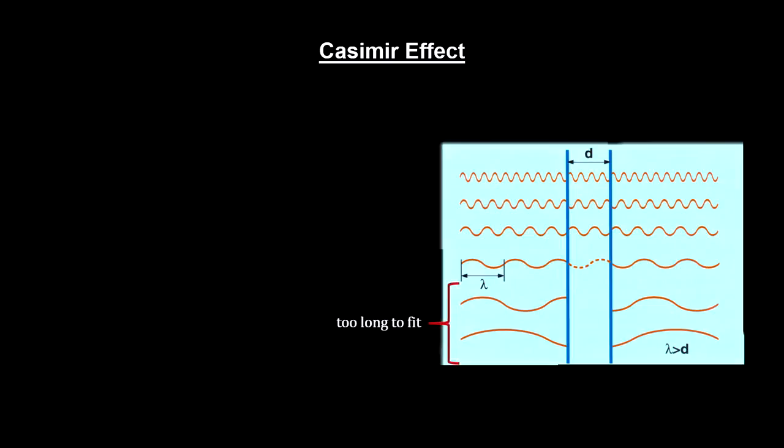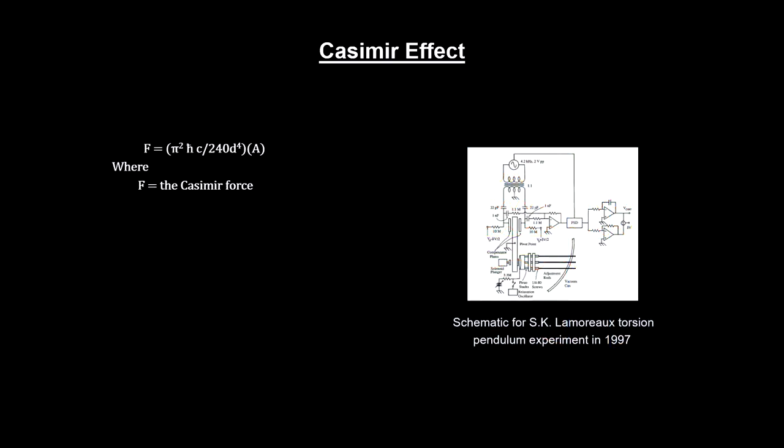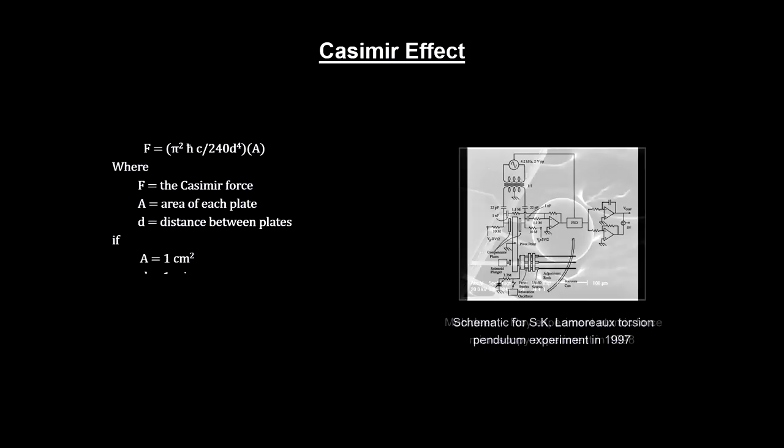If you place two parallel low mass conducting surfaces close to each other, the fluctuations in the quantum field will be limited in between the surfaces, but not outside the surfaces. This will create a negative pressure on the surfaces and push them together. Negative pressure is called tension. This effect is called the Casimir effect.